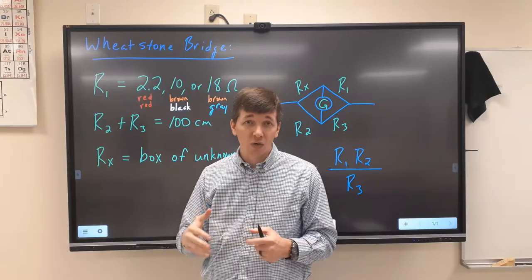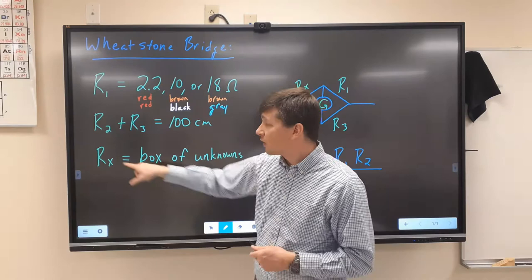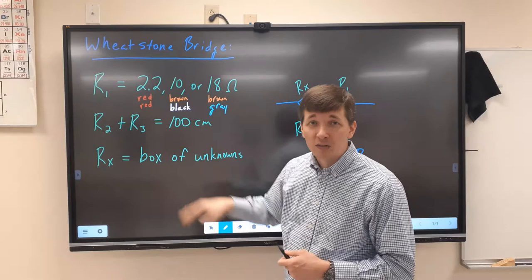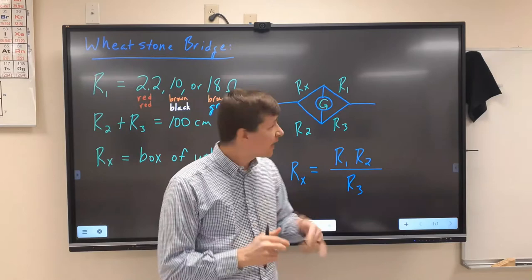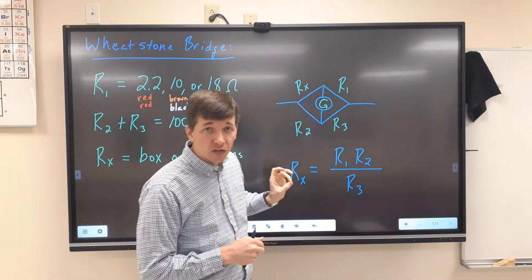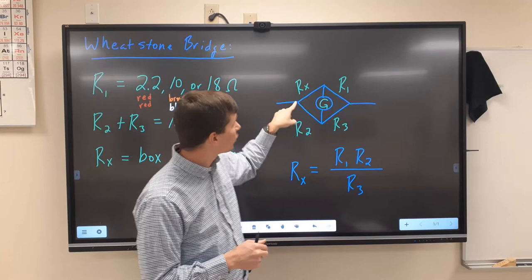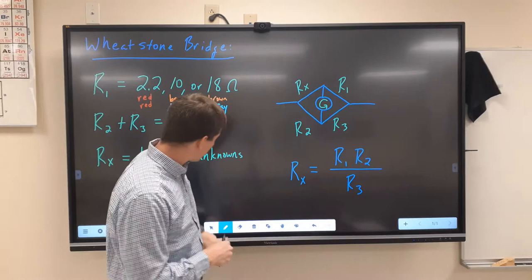We don't need to know their exact resistance because resistance is proportional to the length — the longer the length, the greater the resistance. Rx is going to be your unknown resistor that you're trying to solve for. You'll see a box of seven unknown resistors that we're going to plug into position Rx. We're going to use a galvanometer positioned in between two portions of our circuit, with a parallel circuit involving R2 and R3 on one side, and Rx and R1 on the other side.